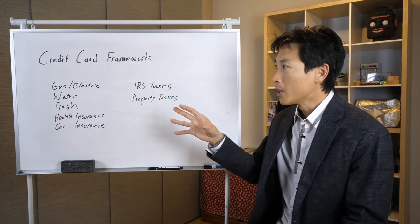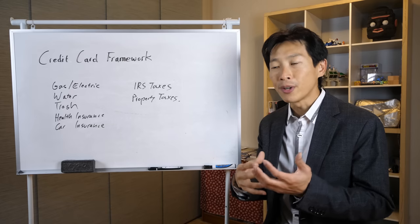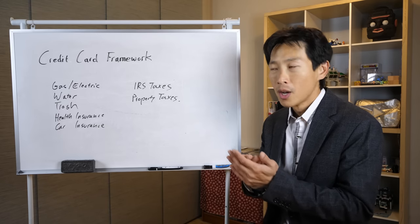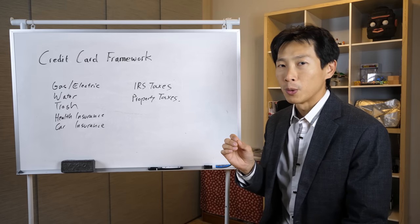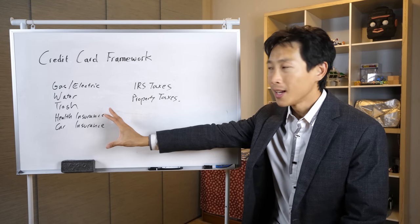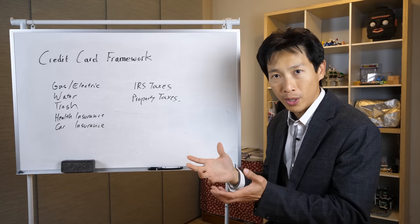Now, a lot of times people pay these bills on the first column with their checking account. Now, you can also do something different where if you look at all the bills that you ever pay, just look at every single outflow that you have and see if they accept a credit card with no fee. If they do, then there is something interesting that you can do because you can essentially use all these things as a sort of buffer zone in order to churn credit cards.